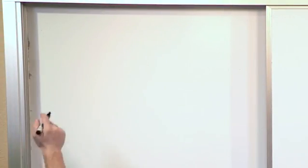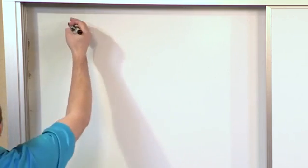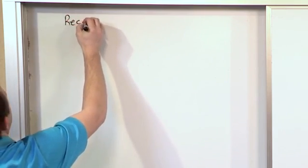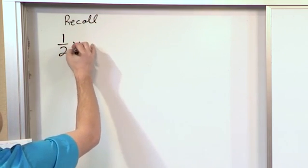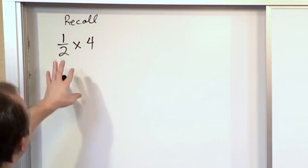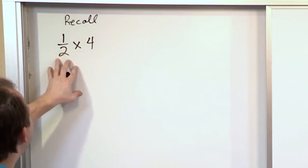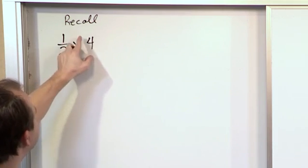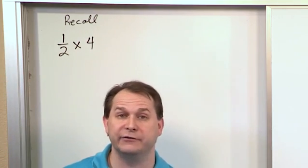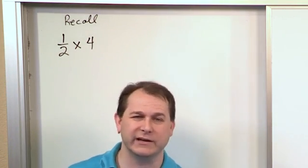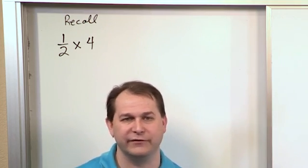Alright, so let's recall the multiplication 1 half times the number 4. Now, what you need to realize is that when you have a fraction times anything, in this case we have it times a number, but the number 4 can be written as a fraction, just 4 over 1, so really this is multiplying by a fraction also.